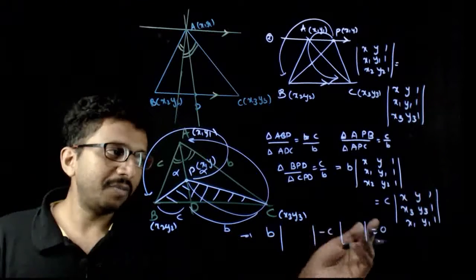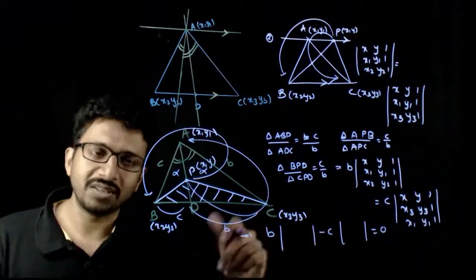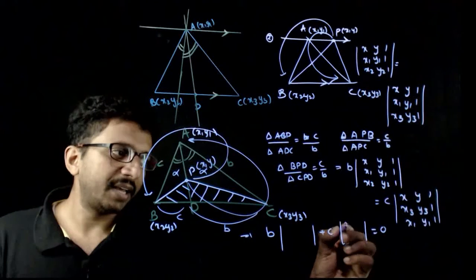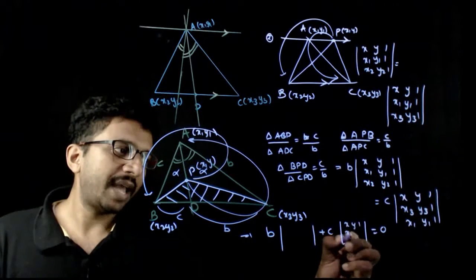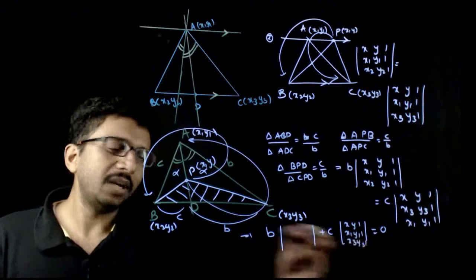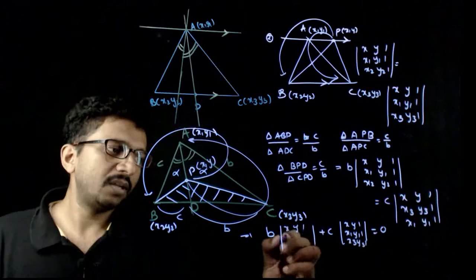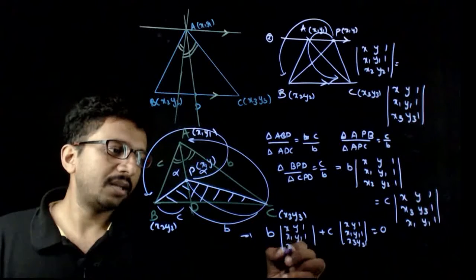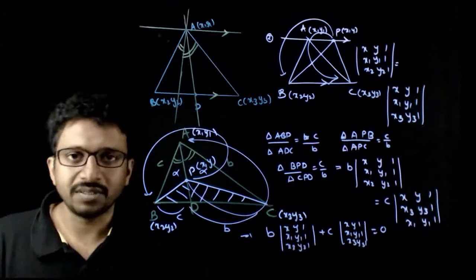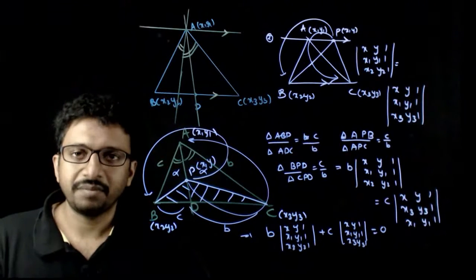To make the minus positive, exchange two rows in the second determinant. So B times determinant of (x, y, 1), (x1, y1, 1), (x2, y2, 1) minus C times determinant of (x, y, 1), (x1, y1, 1), (x3, y3, 1) equals zero. This is the equation of the angle bisector. Thank you.